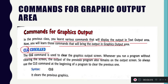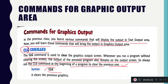When you run a program without clearing the previous program's screen, the output of the previous program also remains on the output screen. Always use the CLG command at the beginning to clear the previous output. The syntax is simply CLG — it clears the previous graphic output.